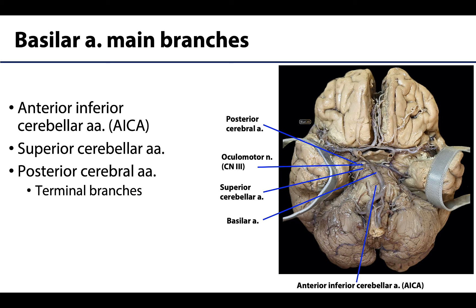Very near the junction of where the vertebral arteries turn into the basilar artery, you typically have the first branch of the basilar, which is the anterior inferior cerebellar artery, or AICA. The basilar artery also gives off many smaller branches in this region. The two terminal branches of the basilar are the superior cerebellar and the posterior cerebral. Note the distinction: we're talking cerebral for the posterior portion of the cerebrum and cerebellar for the anterior portions of the cerebellum, which explains those different names.